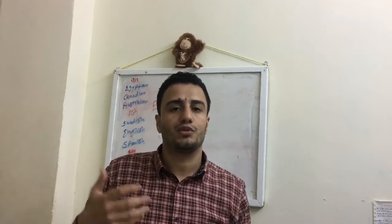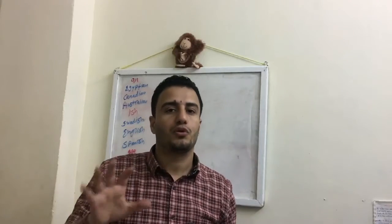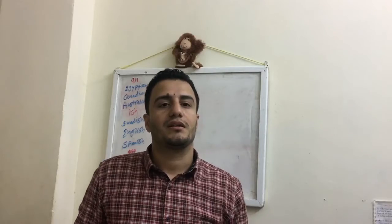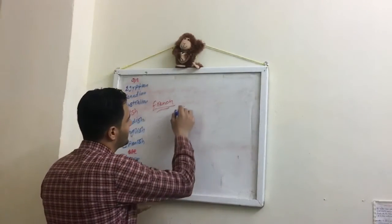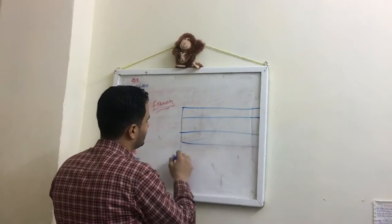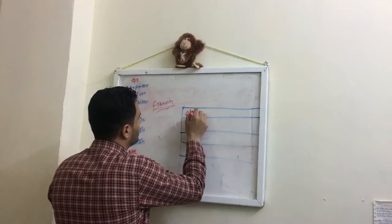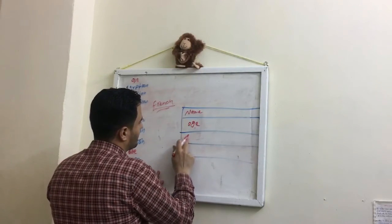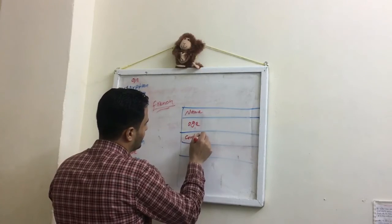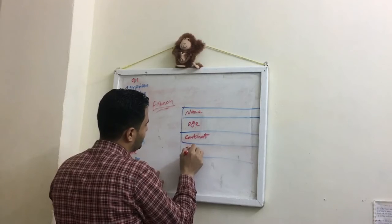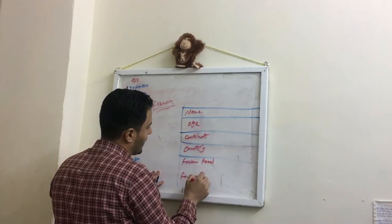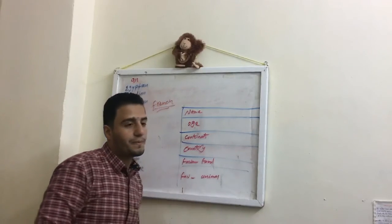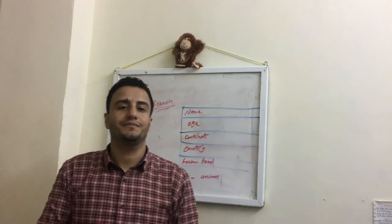Now I need you to imagine that you are at a party and you meet some new people. Have a conversation with four other students like this one. Use the answers to fill in the table — I will draw the table for you now. Write this information: name, age, continent, country, favorite food, and favorite animal. I will give you five minutes to finish this activity. Please go ahead.